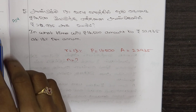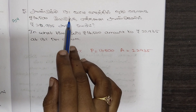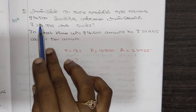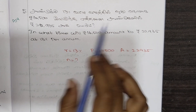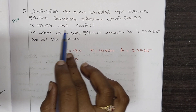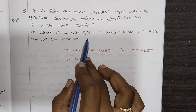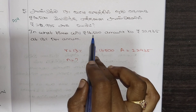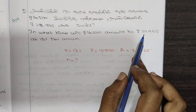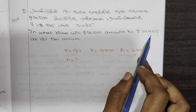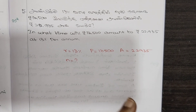This is the 5th question — it is a previous question. In what time will 16,500 amount to 22,935 rupees at 13% per annum?